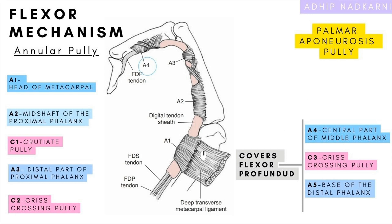The A1 pulley is seen at the head of the metacarpal. The palmar aponeurosis pulley is proximal to A1. The A2 pulley is present at the mid shaft of the proximal phalanx. Then there is the A3 pulley, which is present at the distal part of the proximal phalanx.